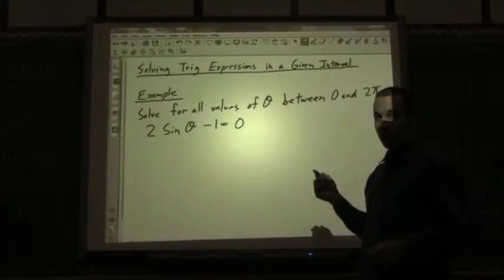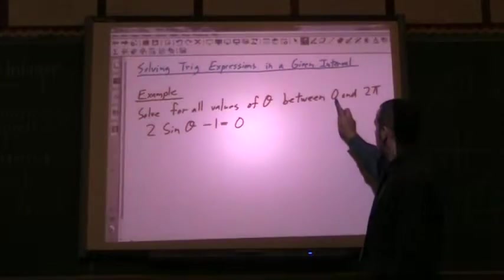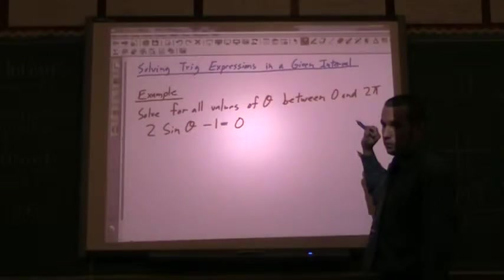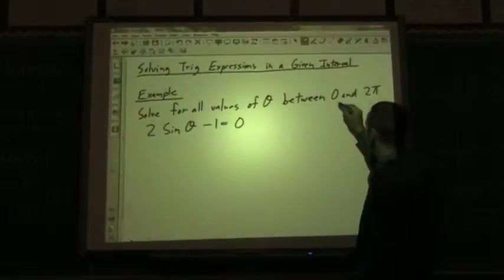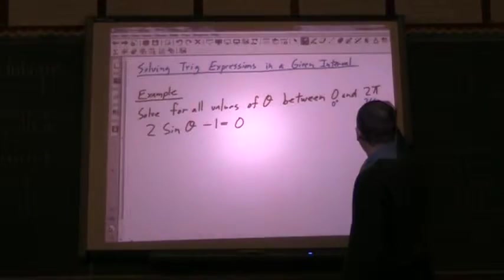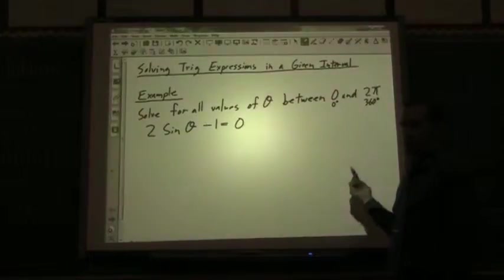For a lot of people, they prefer to work in degrees. So if you prefer to work in degrees, just because they give you the range in radians doesn't mean that you have to answer it in radians if you don't like. So this is between 0 degrees and 360 degrees. So I prefer to work in degrees if I can, so that's the way I will work.